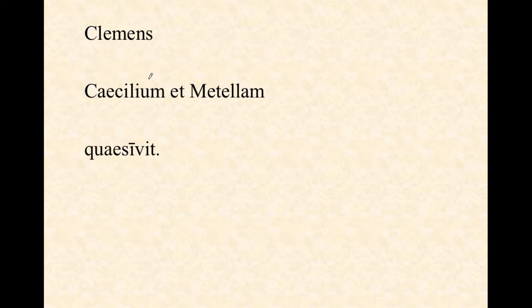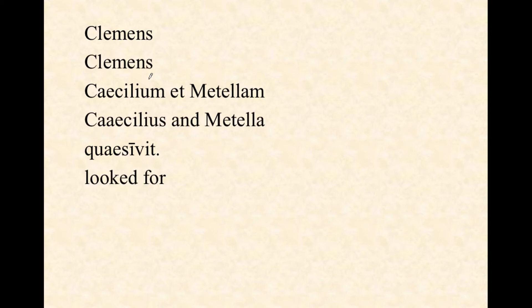Clemens Caecilium et Metellam quaesivit — Clemens looked for Caecilius and Metella. Now think about this: Caecilius is the master of the house, usually busy with business. Metella is his wife. Why does Clemens honestly believe he has the right to go in and basically interrupt anything Caecilius and Metella are doing? Clemens knows that if they find out Felix is here, they are going to drop everything and want to greet him. Who is this Felix? That's the mystery.